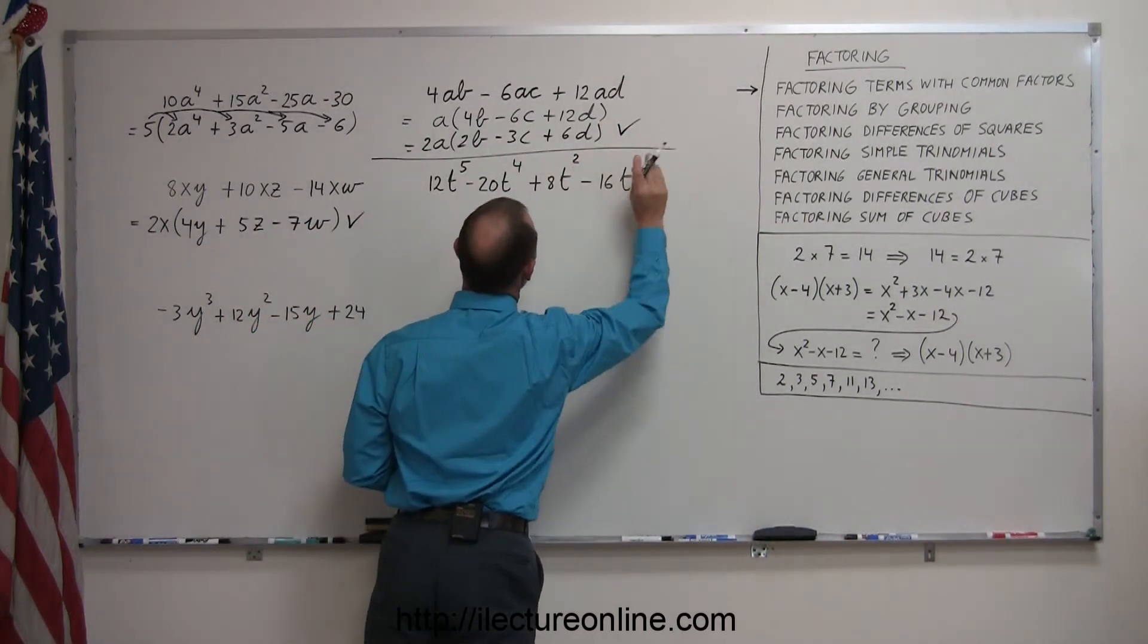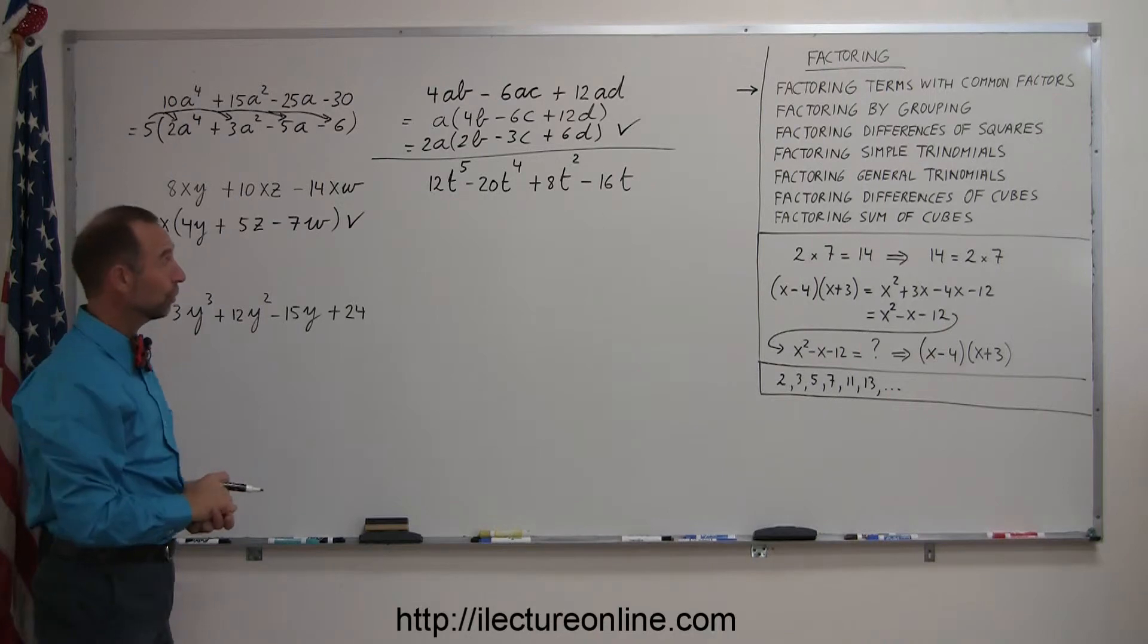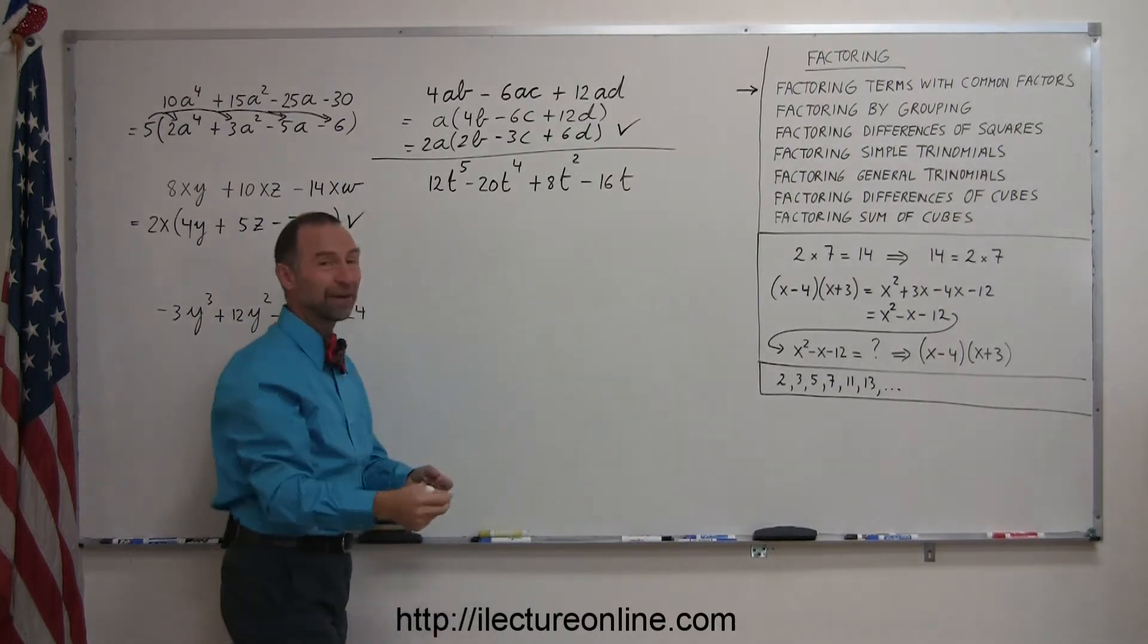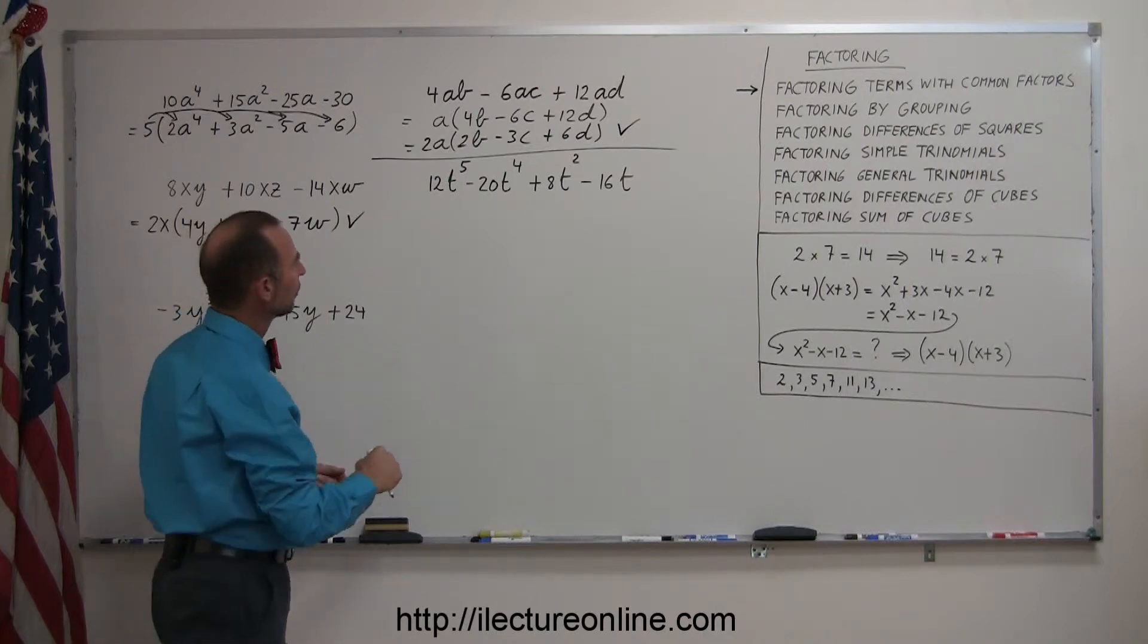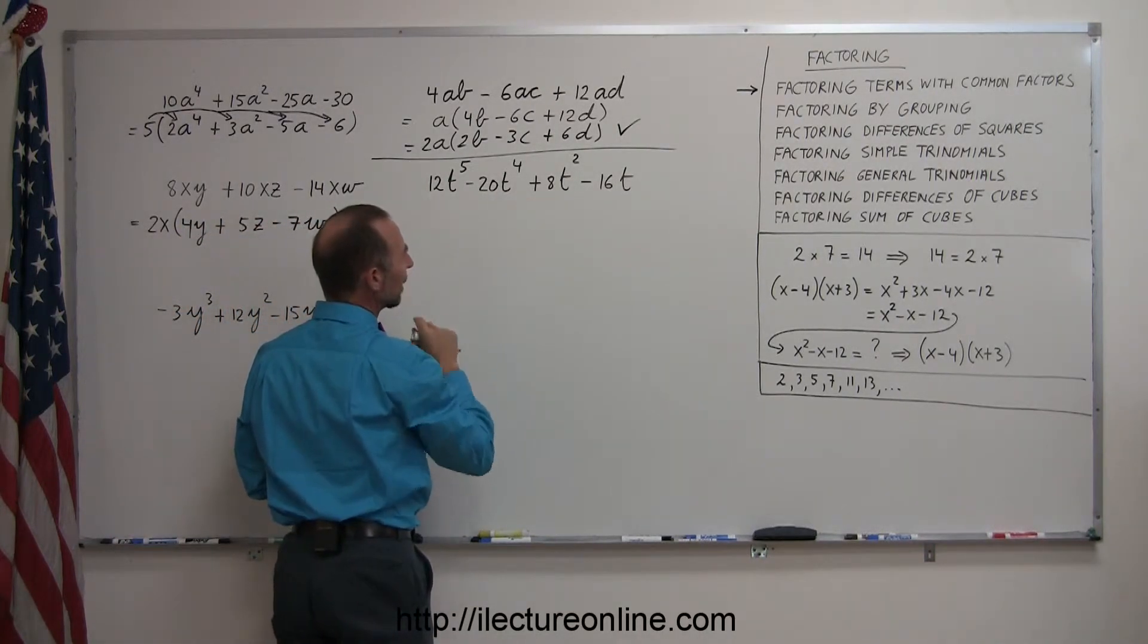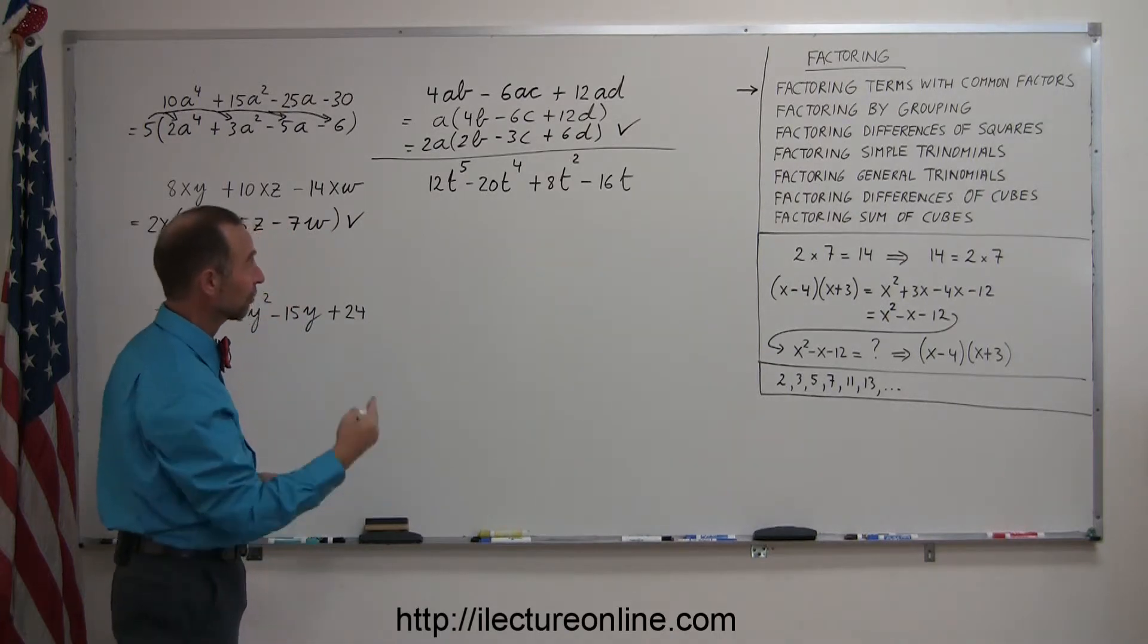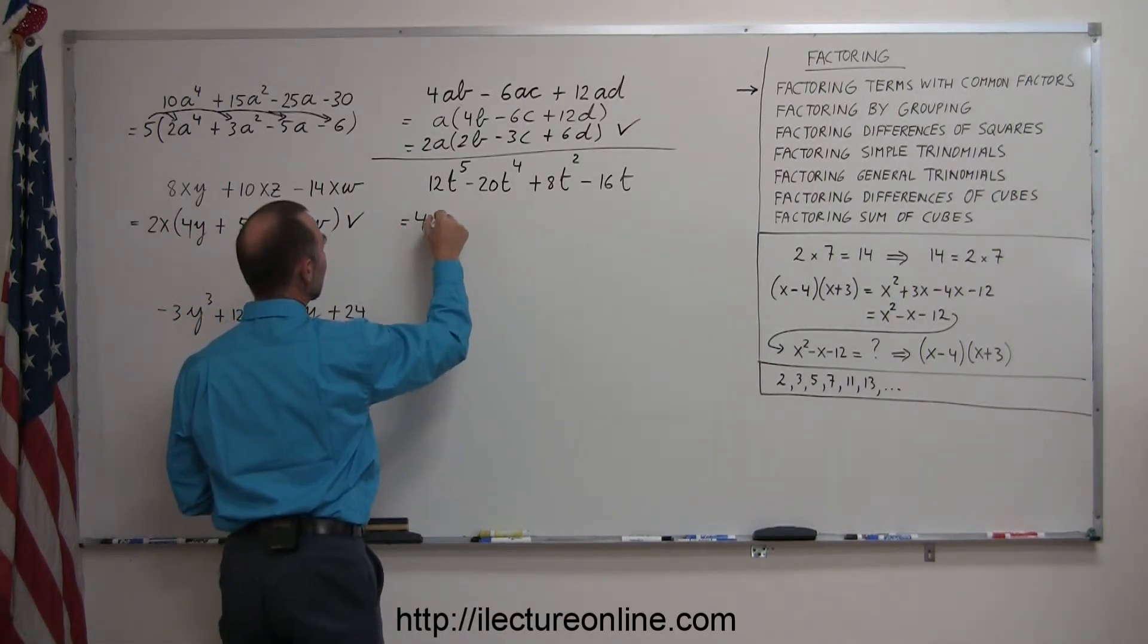Okay, moving on to the next problem. Let me draw a line here so we don't confuse this with what we have above there. I have again four terms. Notice that every one of them has a variable t in it, but this one only has a t to the first power, so I can only factor out a t to the first power. All the numbers are even, so it looks like I can factor out a 2, and if I look carefully, I might be able to factor out more than a 2, because I know that 12, 20, 8, and 16 are all divisible by the number 4, so I can actually factor out a 4 and a t, so this becomes equal to 4t times.